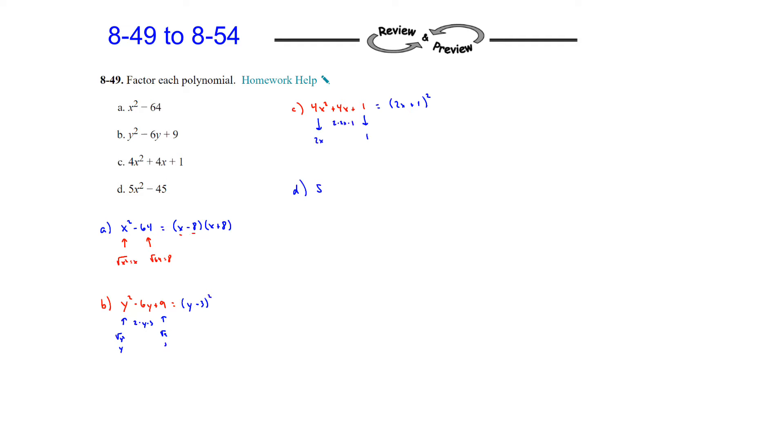Part D, 5x squared minus 45. Now, you have two terms. It doesn't appear to be a difference of squares because you can't take the square root of 5x squared and get a nice value back. But if you look a little closer, we also notice that there is a common factor of 5. So if we use the distributive property and we have 5 times x squared minus 9, now we do have a difference of squares. So we can factor that into x minus 3 and x plus 3.